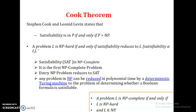Cook's theorem states that the satisfiability problem will be NP-complete if and only if all P-type problems are equal to NP. And we can prove that a problem will be NP-hard if and only if satisfiability reduces to L. So using this satisfiability algorithm, we are trying to reduce all other languages and prove that all the problems or languages belong to NP-hard.